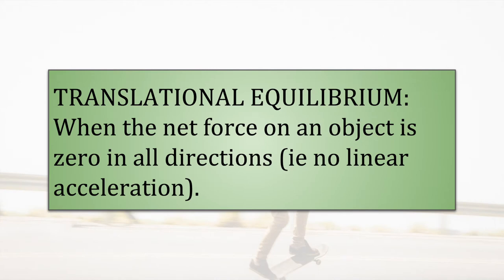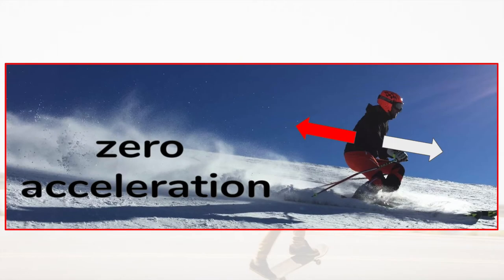Here is the definition of translational equilibrium. Translation here means movement in a straight line. Equilibrium tells us that the sum of all the forces acting on an object is zero. There may be several forces, but the important thing is that their total effect when added as vectors is zero. This means that the object does not accelerate. It does not mean necessarily that the object is standing still — rather, it has a constant speed in one direction.